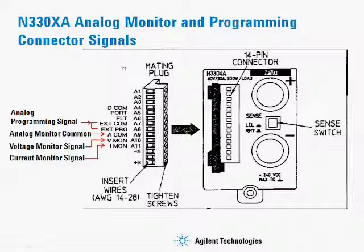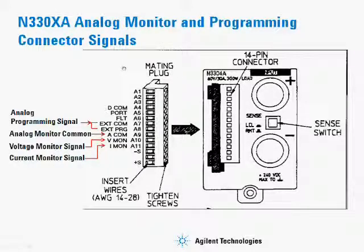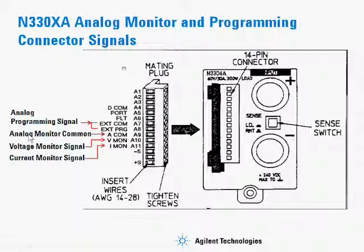Today we're going to talk about the M3300 load family of modules and how to use the analog monitor and programming connector signals located on the rear terminals. Labeled are the analog programming signal lines: external comm and external programming, and the analog monitor signals — analog monitor common shown as ACOM, voltage monitor, and current monitor.